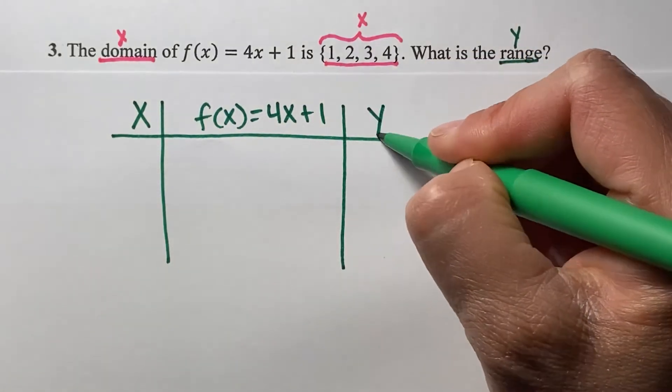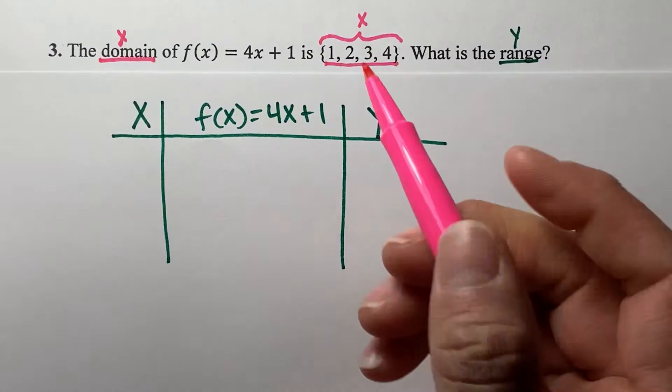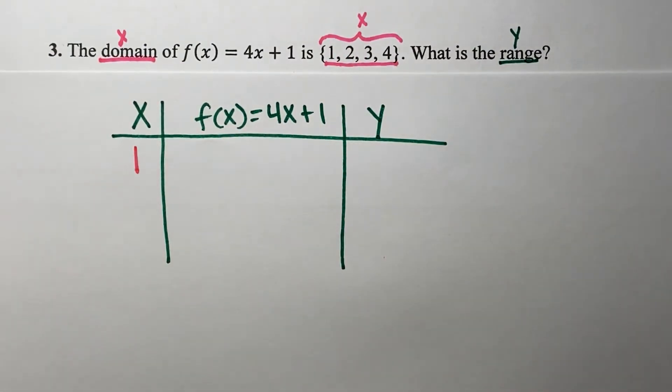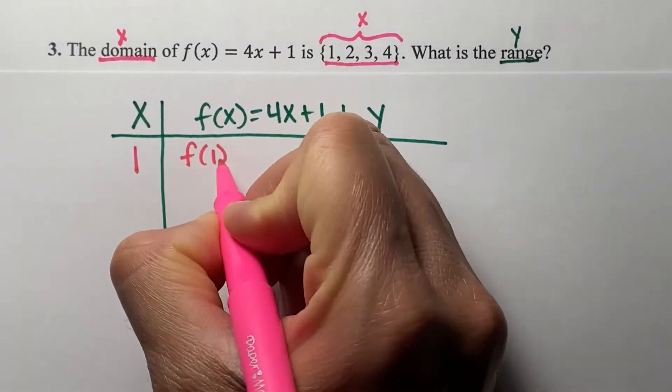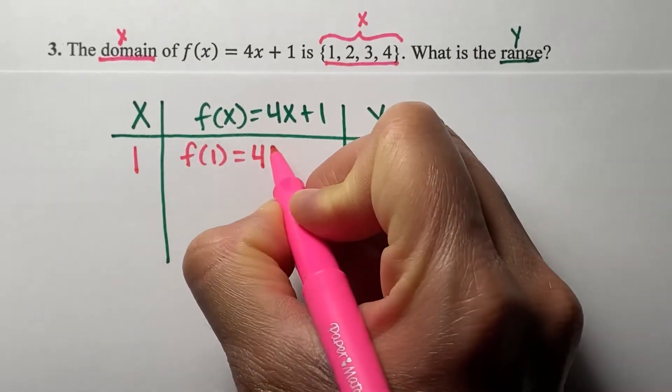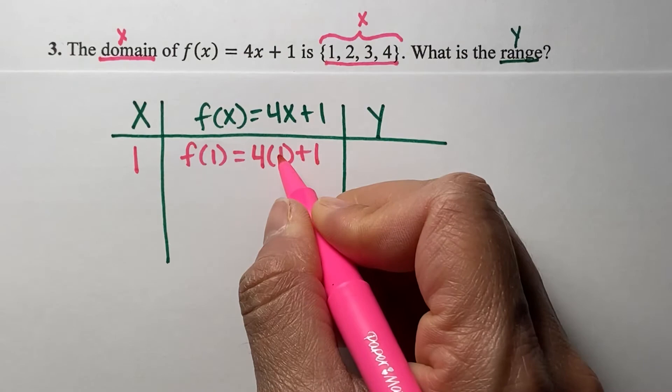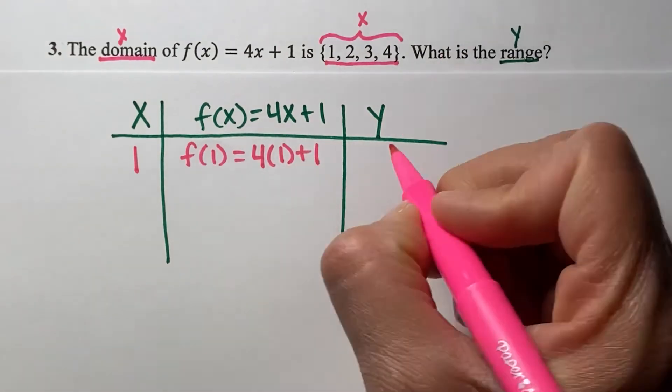And then last, we'll have our range. Let's start with 1. When x is 1, I'm going to plug in 1 to this equation and find out what the range is, y. So f(1) = 4 times 1 plus 1. 4 times 1 is 4 plus 1 is 5.